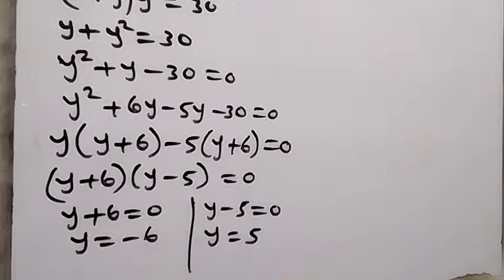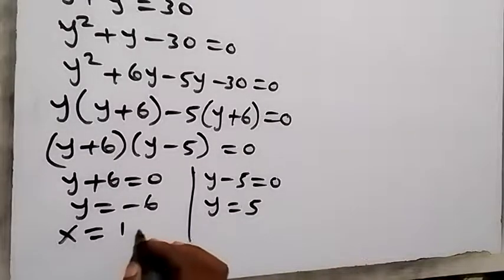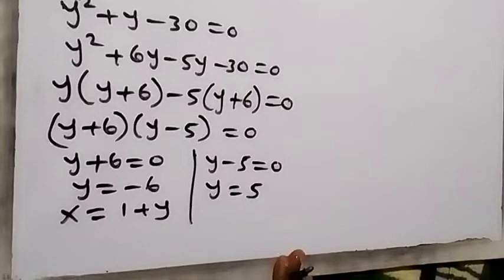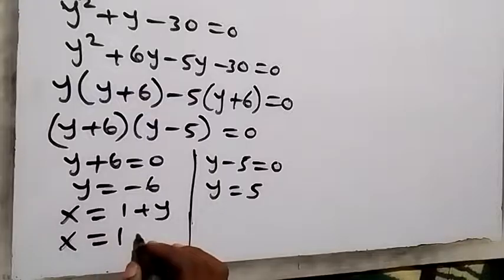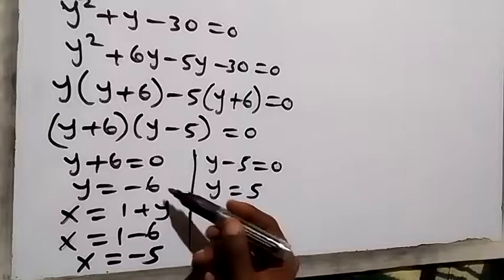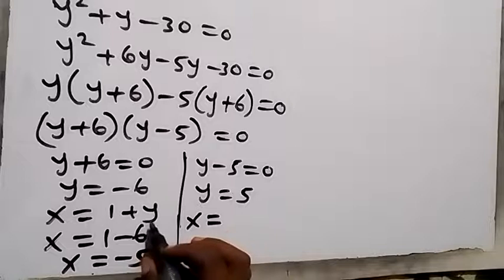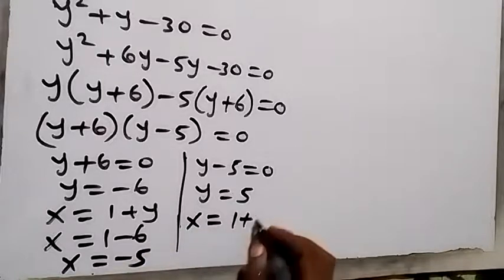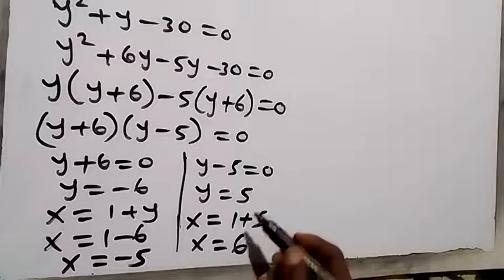These are the values of y. Using x equals 1 plus y: for y equals minus 6, x equals 1 plus minus 6, which is minus 5. So we have x equals minus 5 and y equals minus 6. For y equals 5, x equals 1 plus 5, so x equals 6. So here we have x equals 6 and y equals 5.